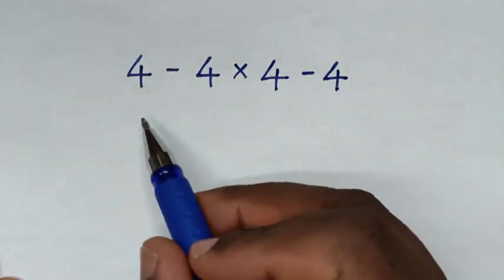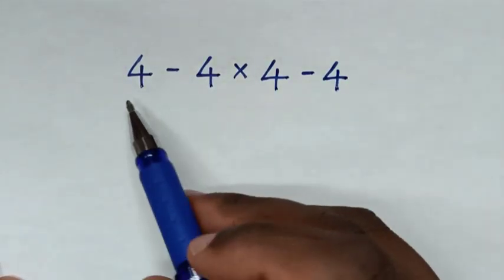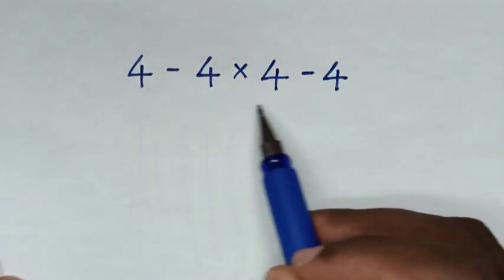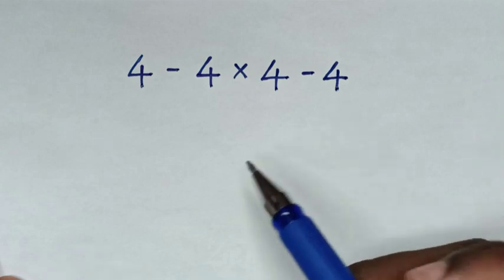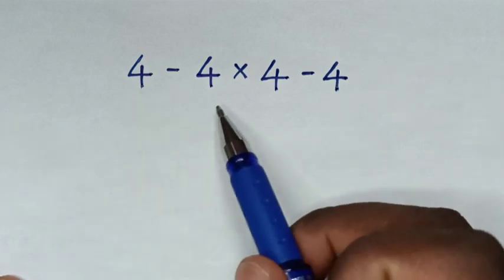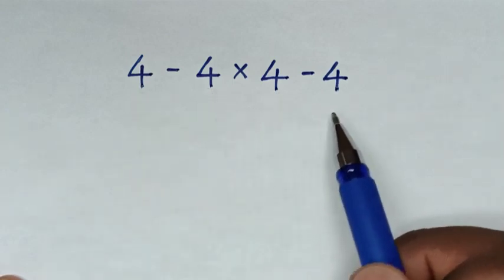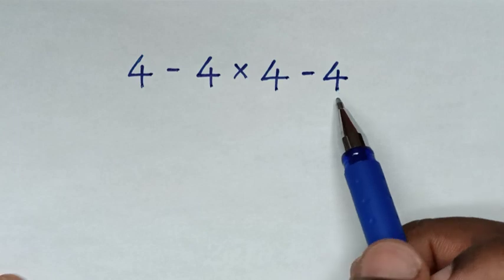Hello, you are welcome to solve this math problem of orders of operations. From the problem, it is 4 minus 4 times 4 minus 4.